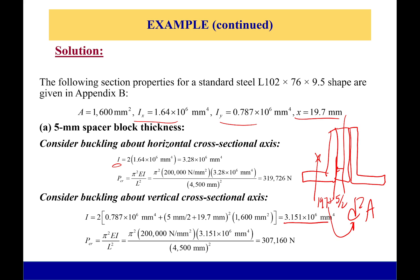And I get this as my moment of inertia. After that, plug and chug. I have my inertia, I know everything else. I get 307,160 newtons. So I already see that this is going to fail more quickly around the vertical axis than the horizontal with a 5-millimeter spacer. But we have one more to do – let's check out the 20-millimeter spacer.